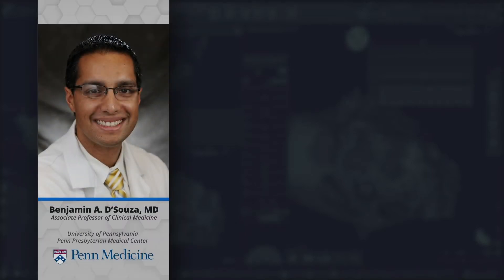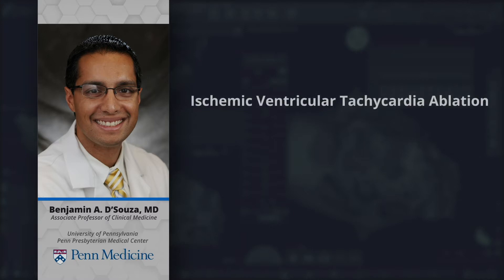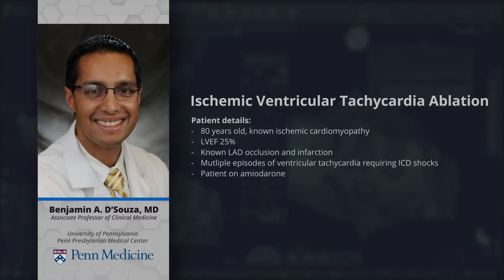Hello, this is Benjamin D'Souza. I'm an electrophysiologist practicing at the University of Pennsylvania. The following case is an ischemic ventricular tachycardia ablation performed at Presbyterian Medical Center for a patient who is 80 years old and has a known ischemic cardiomyopathy with an ejection fraction of 25%. This case will highlight the importance of efficient workflow to safely and appropriately perform a VT ablation in an elderly patient with comorbidities.